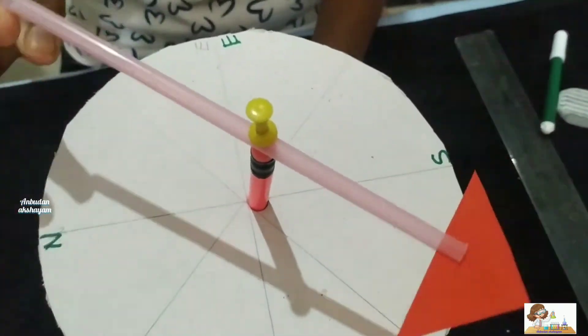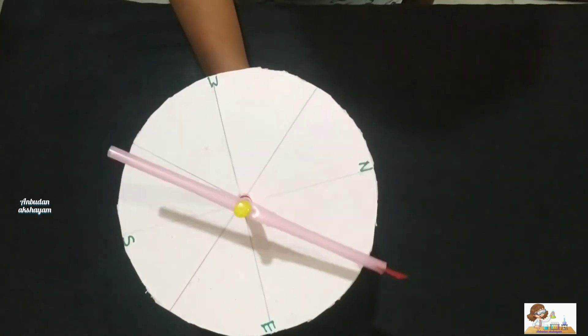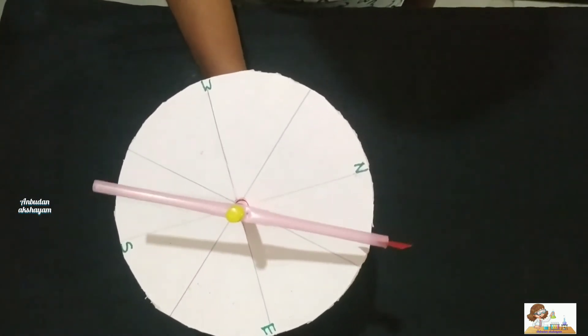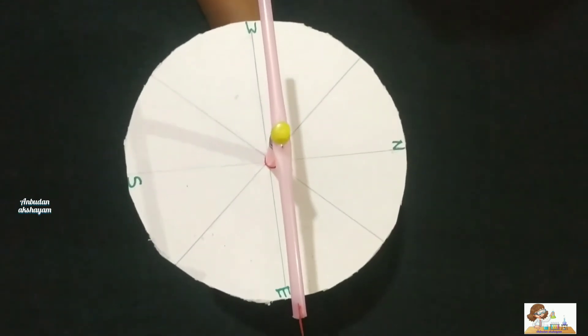Now our wind vane is ready. Now I am going to check it. Now the arrow mark is facing towards the east.